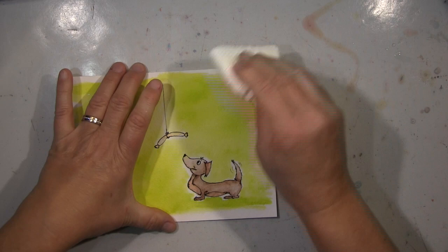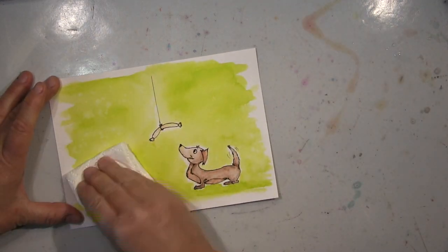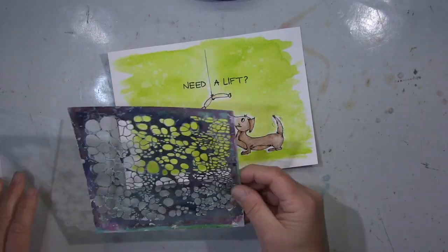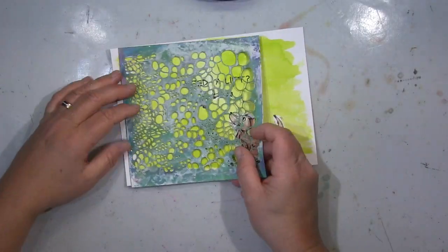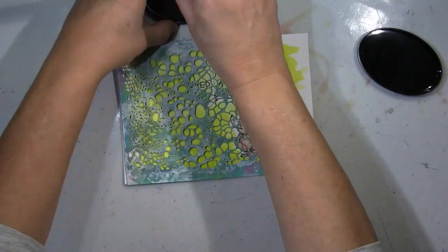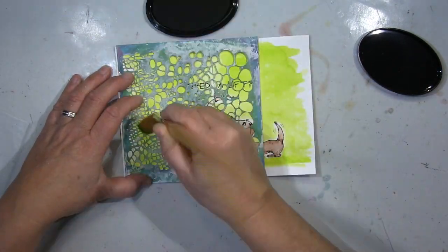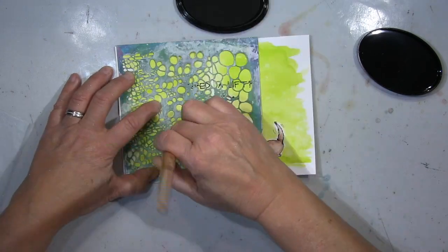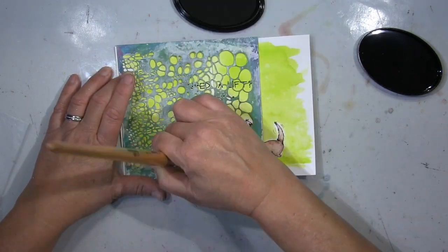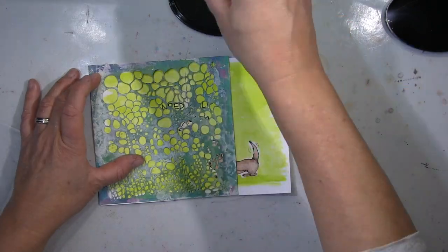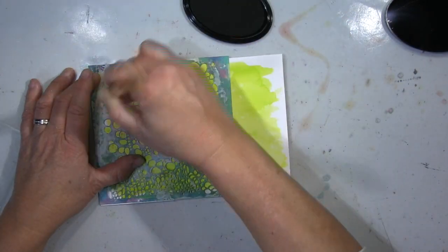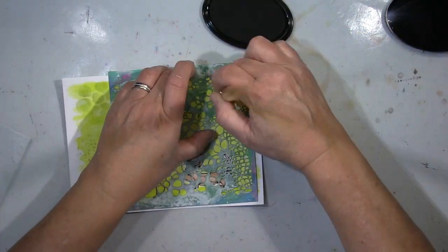So, jetzt mache ich hier ein paar Wassersprenkler, lass das ein kleines bisschen einwirken und tupfe es dann ab. For the background I use the Intense from Spectrum Noir. I still have them in the jar. They are only as markers now available, but I still have to use them with my jars, of course. Bit of water splatters on top, left that to soak in a bit, and then dab it off.